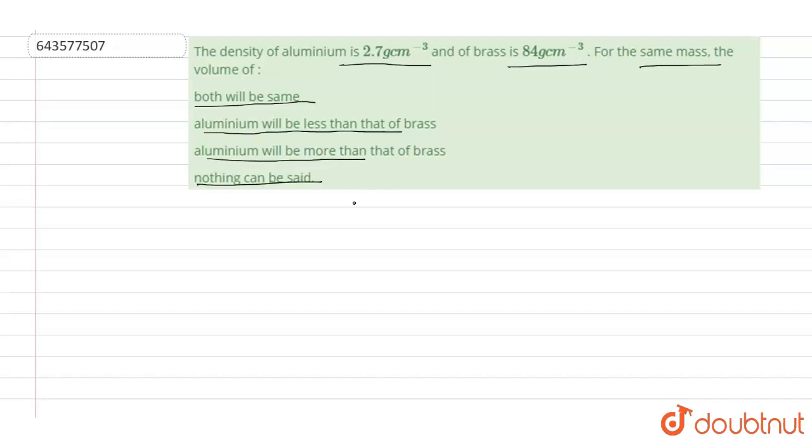As we know, the relation density is equal to mass upon volume. But here we have to find volume, so V equals M upon D. Keeping M constant, as we can see in the relation, volume is inversely proportional to the density.